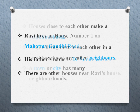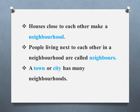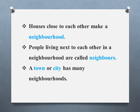Houses close to each other make a neighborhood. Next to our house, one more house is there — a continuation of houses — that makes the neighborhood. People living next to each other in a neighborhood are called neighbors. He or she is our neighbor because they live next to our house.